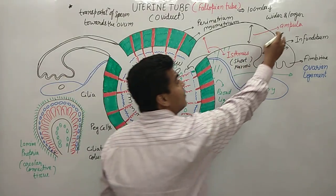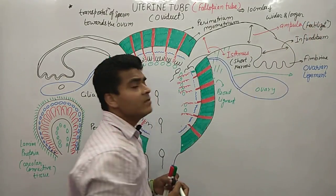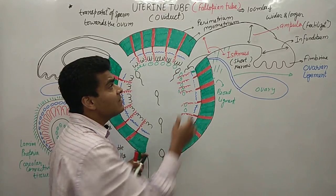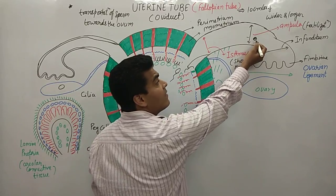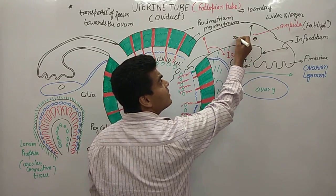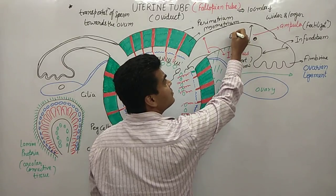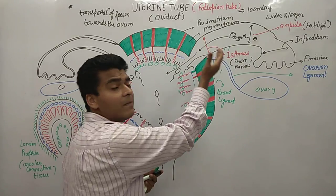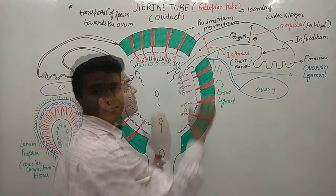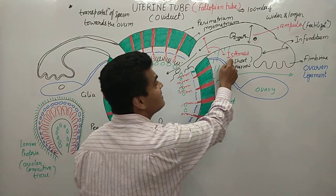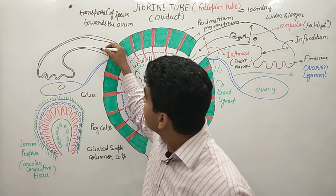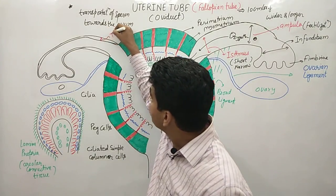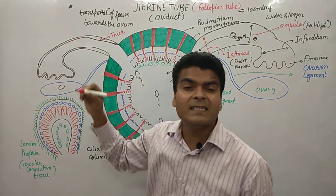The ampulla is the area where fertilization occurs. After fertilization in the ampulla, there is formation of a zygote. The zygote then moves into the uterus, so the fallopian tube also helps in the transport of the zygote into the uterus. Note that the wall of the isthmus is thick, while the rest of the fallopian tube wall is thin.